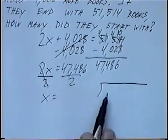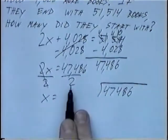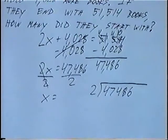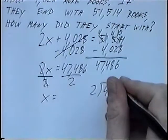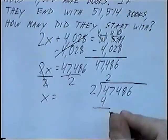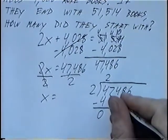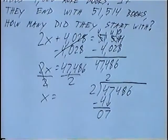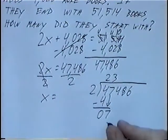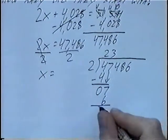The top number, or numerator, we'll put inside the long division sign. 47,486. And the number 2 we're dividing by, or the denominator goes outside the dividing sign. 2 goes into 4, 2 times. So put that above the 4. 2 times 2 would be 4. And when you divide, we'll subtract the numbers. 4 minus 4 would be 0. And then we'll bring the next number down, which is 7. 2 into 7 would be 3. 3 times 2 would be 6. And 7 minus 6 would be 1.